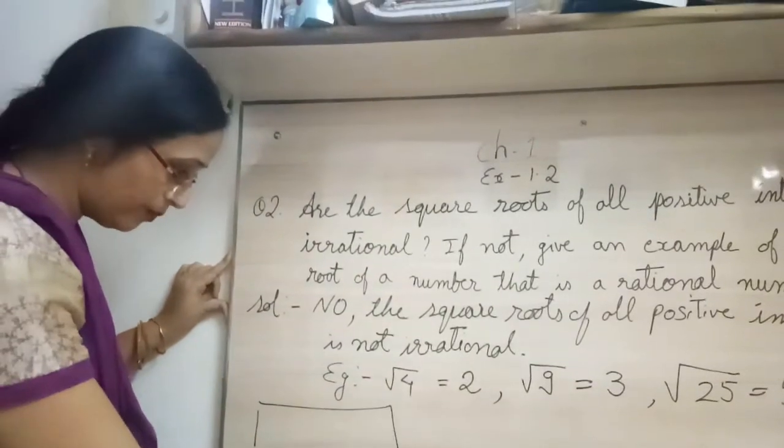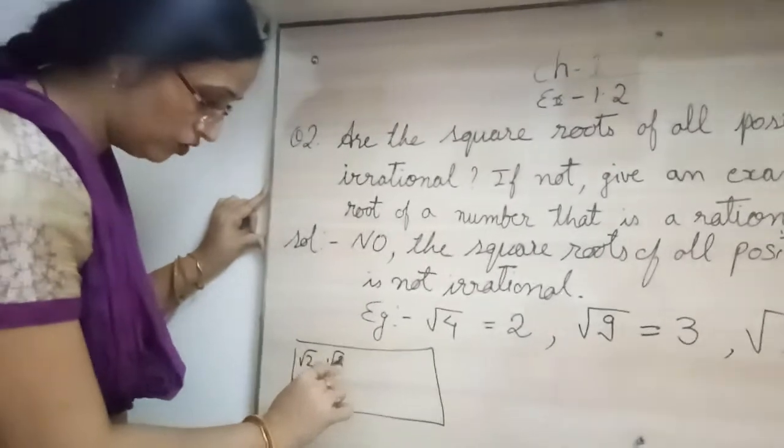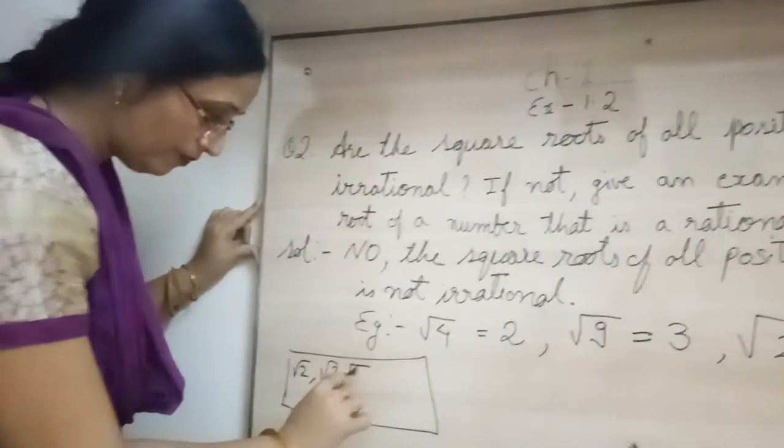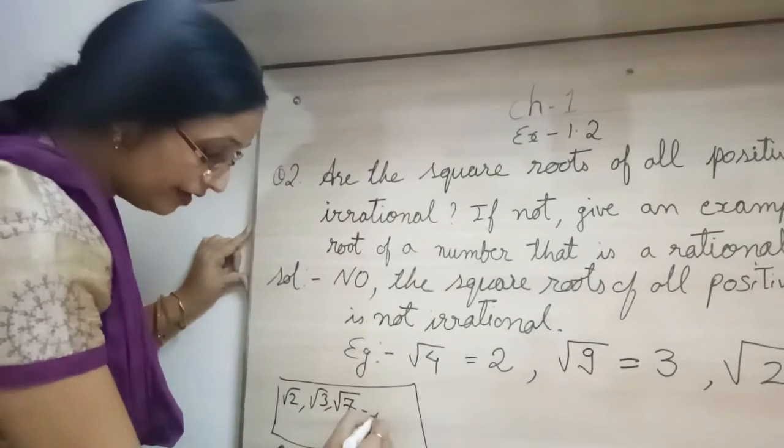If I have a small example, not a part of the answer. If I have root 2, root 3, root 7, then these all are irrational.